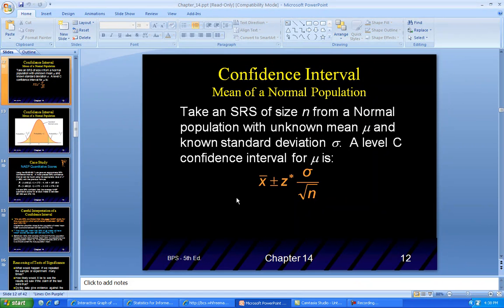We take an SRS of size n from a normal population with unknown mean mu and known standard deviation. The confidence interval for mu will be: your mean plus or minus z-star times the standard deviation. This equation makes it tighter, gives you more assurance that what you're finding is actually true to the population.